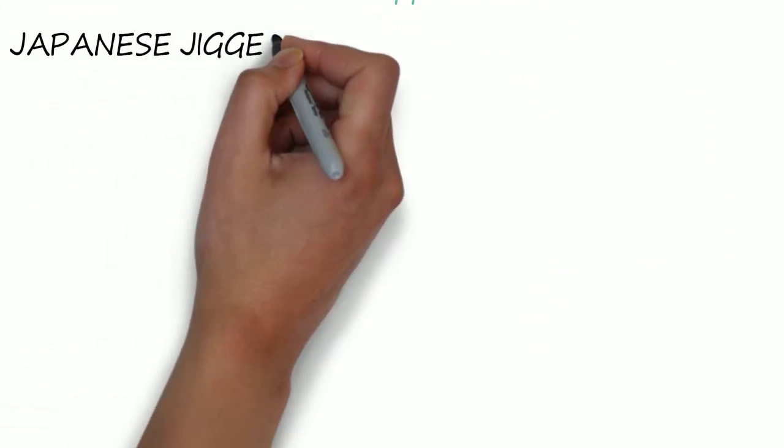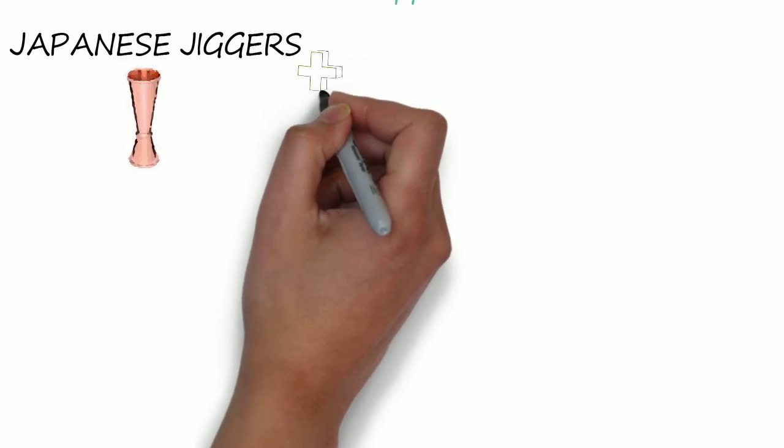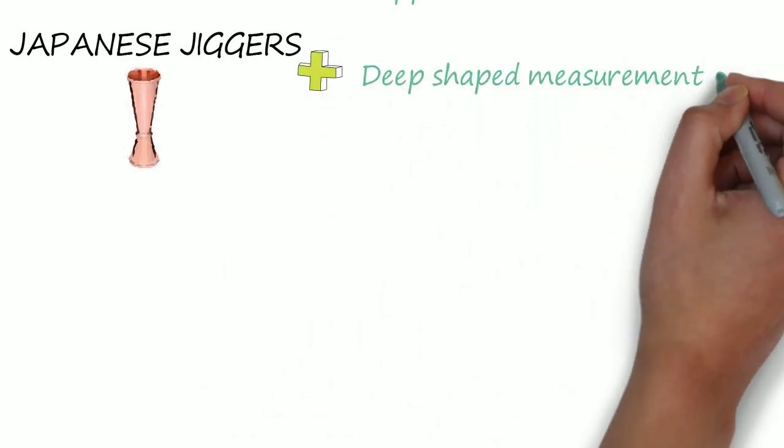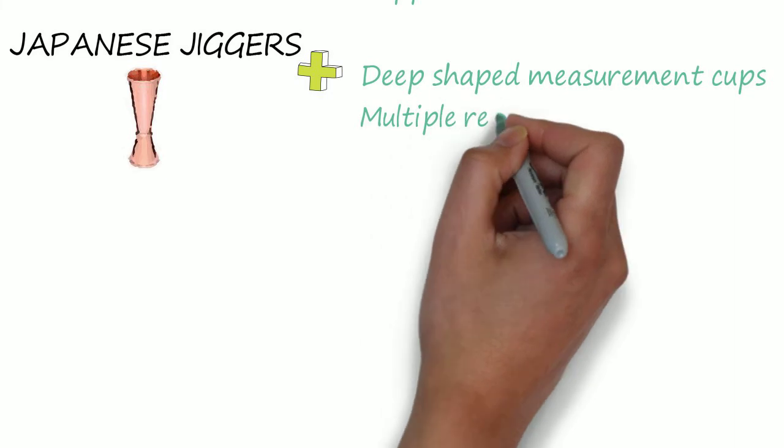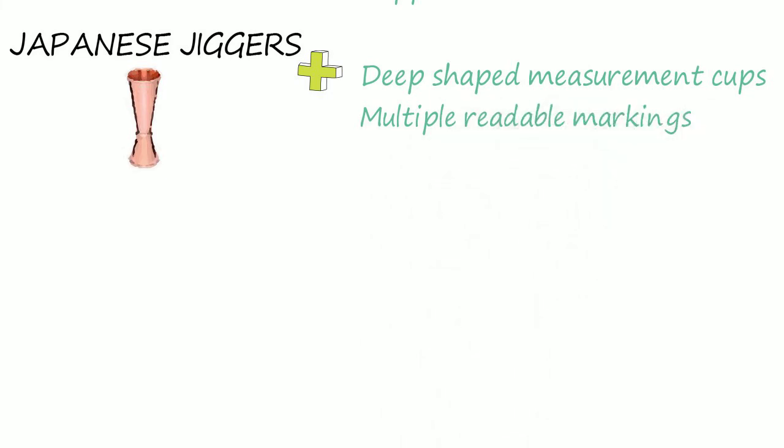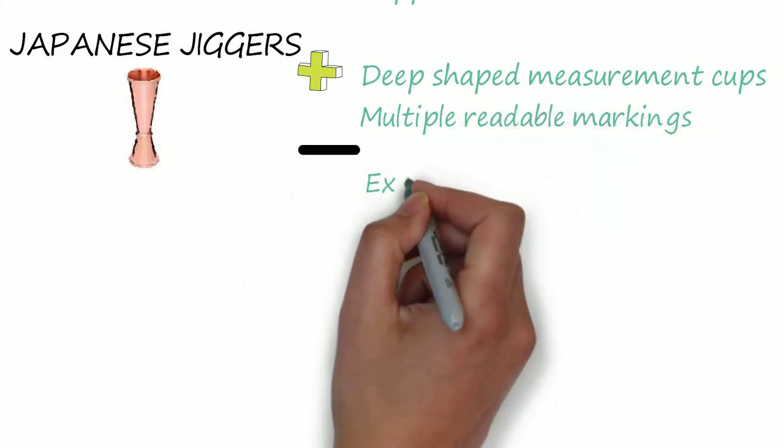The ones that are produced in units for both countries are Japanese jiggers. This elegant style uses deep shaped measurement cups which help you avoid any spillage. They often have multiple readable markings which make them easy to use, although Japanese style jiggers can be on the expensive side.